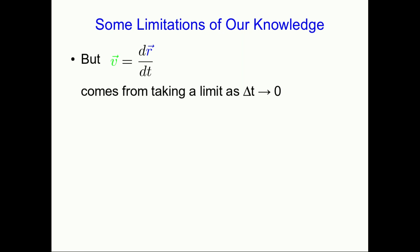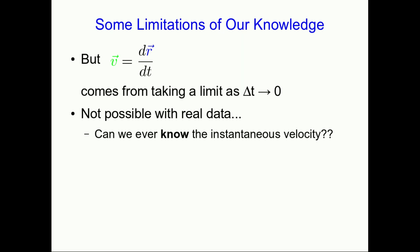Whatever you're studying, it's important to remind yourself from time to time that as humans, our knowledge has limitations on it. And there's a limitation to our knowledge staring us in the face here. Velocity as a derivative of position comes from taking a limit as delta t goes to zero. We're taking shorter and shorter time limits. But with real data, you can't let delta t go to zero. You can't take an infinite number of data points separated by infinitesimal times. So you could ask whether we can ever know the instantaneous velocity for a real object.